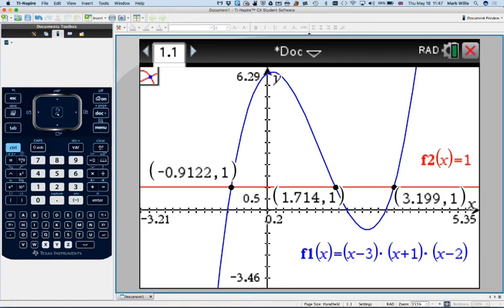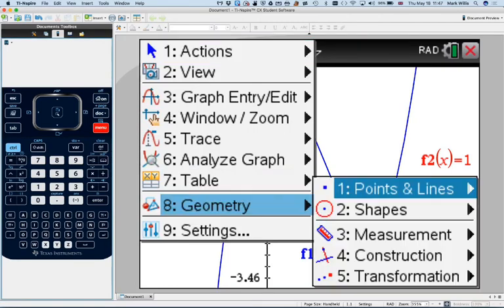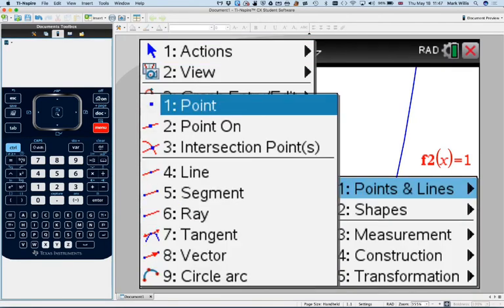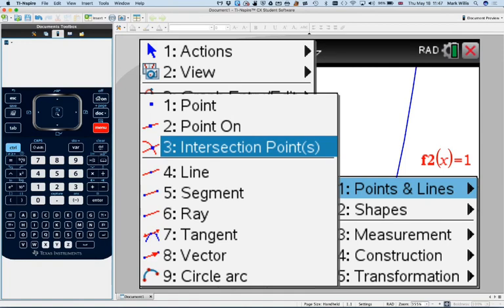So this has been a video. Just repeat the main step again. Menu, number 8, geometry, number 1, points and lines, and then number 3, intersect points. And then you need to click on one graph and then click on the other.